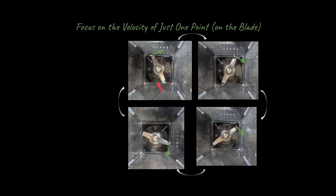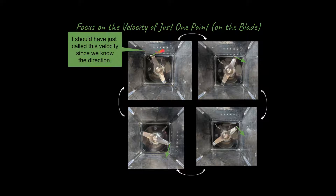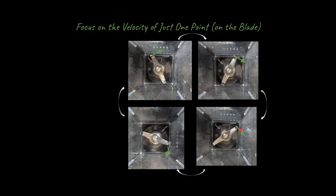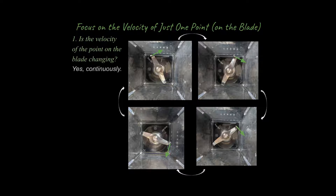I want you to take a look at this sequential set of images and just pick one point on the edge of the blade. This is our velocity at a given point in time, and this is our velocity at another point in time. As this rotates, that velocity changes — in fact, it's constantly changing. Is the velocity of the point of the blade changing? The answer is yes, continuously. We're talking about moving at a constant rotational rate, yet its velocity is still changing because the velocity is changing direction continuously.